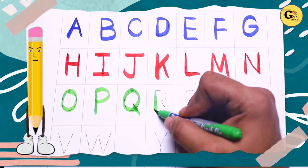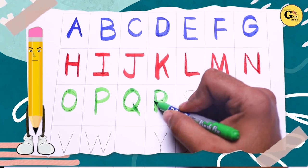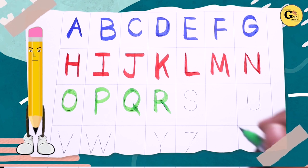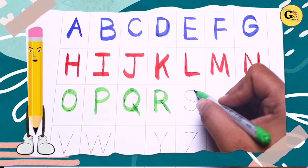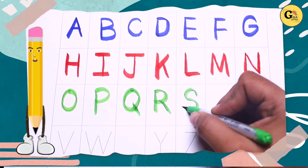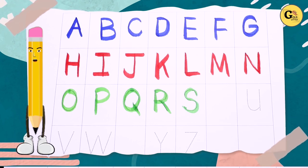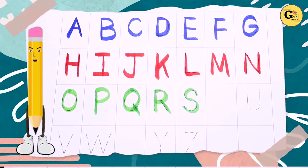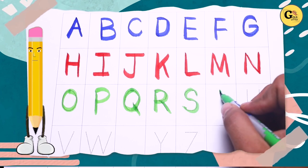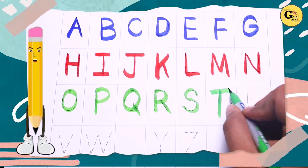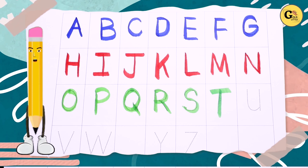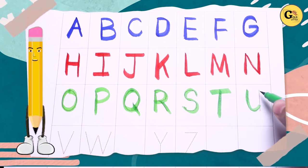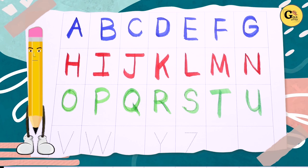R. Green color R. S. Green color S. What is next? T. Green color T. U. Green color U.